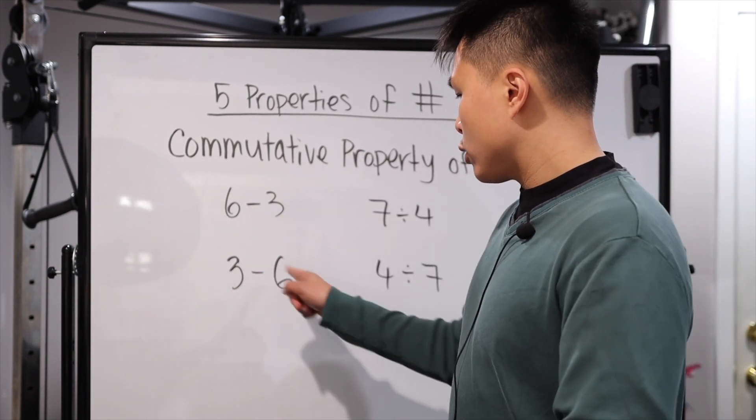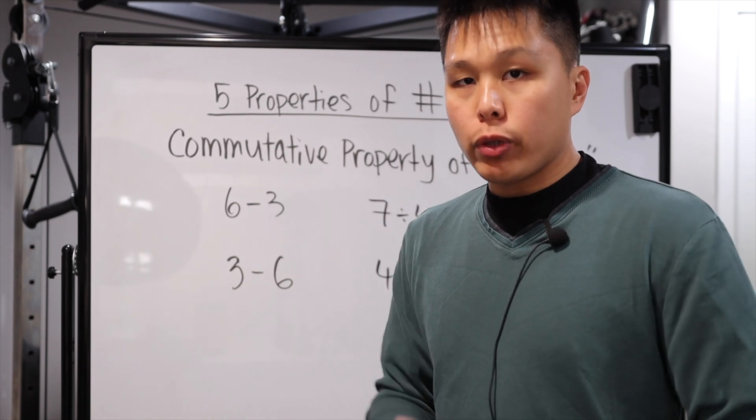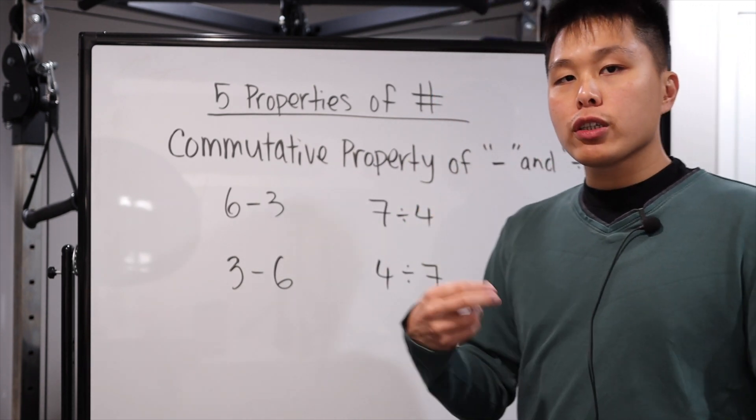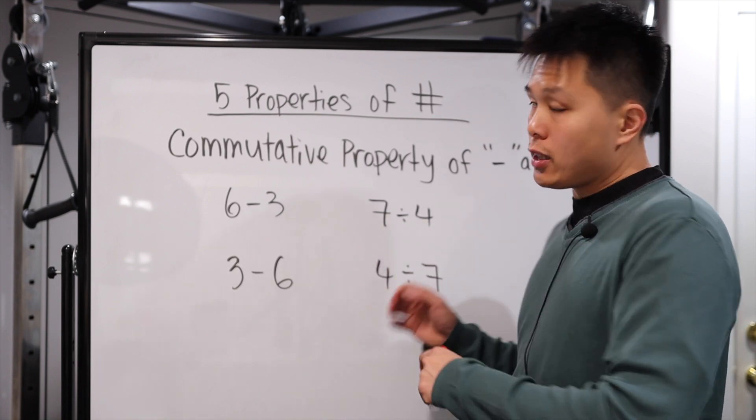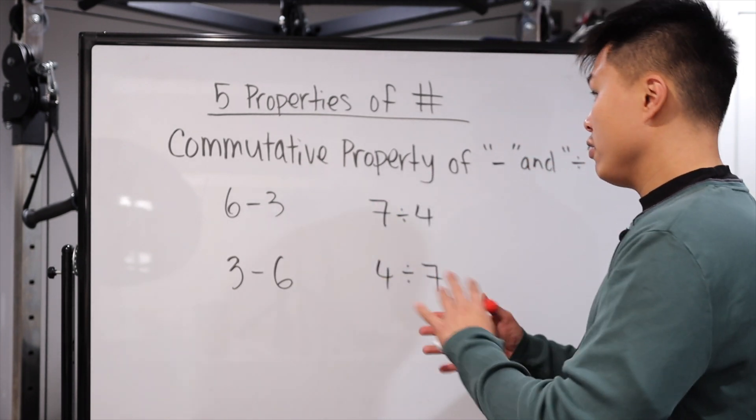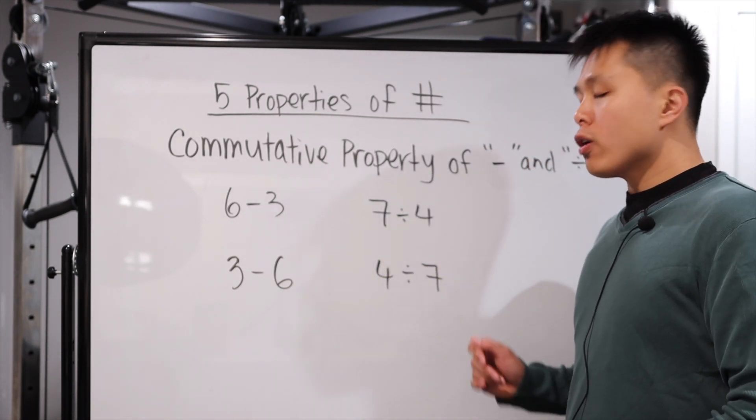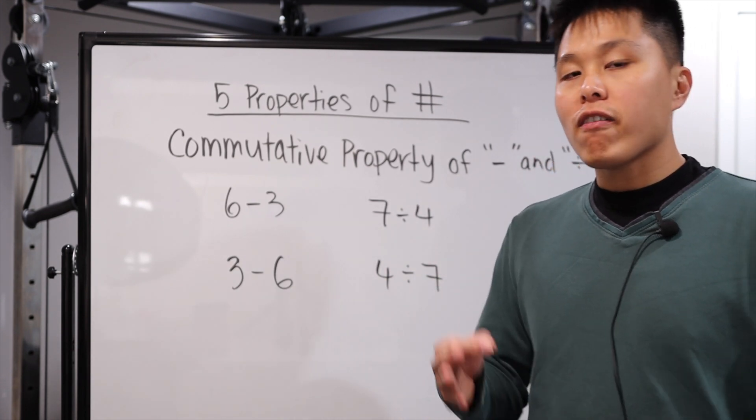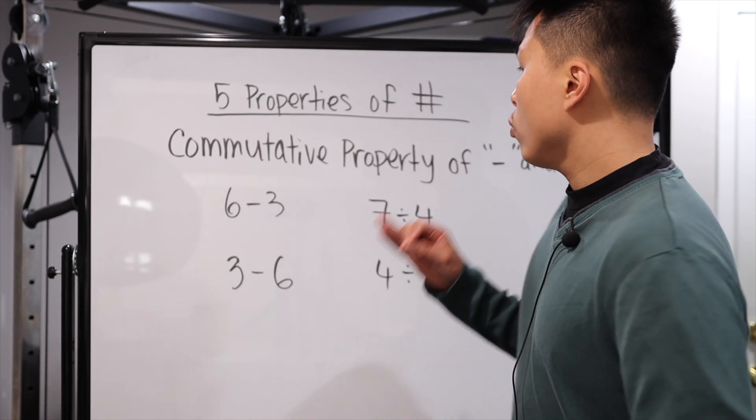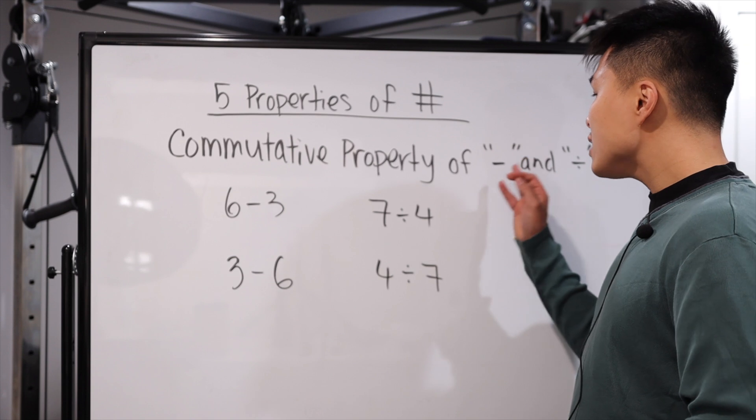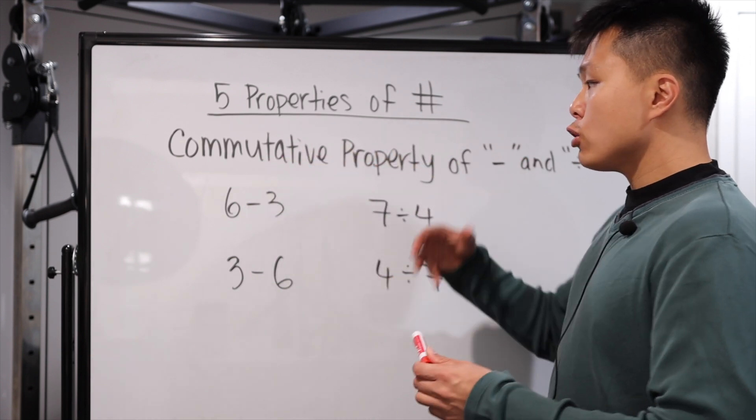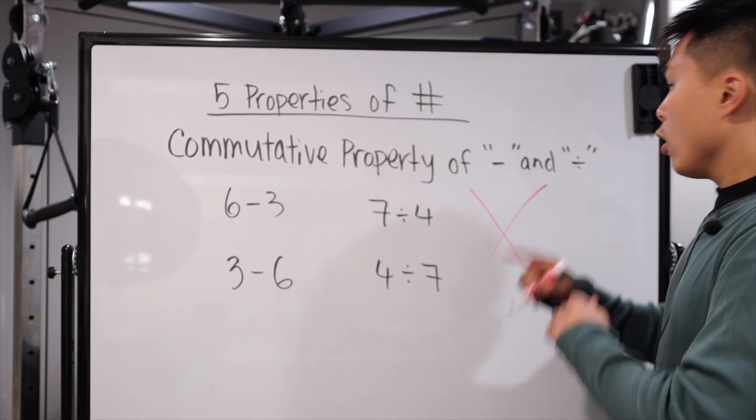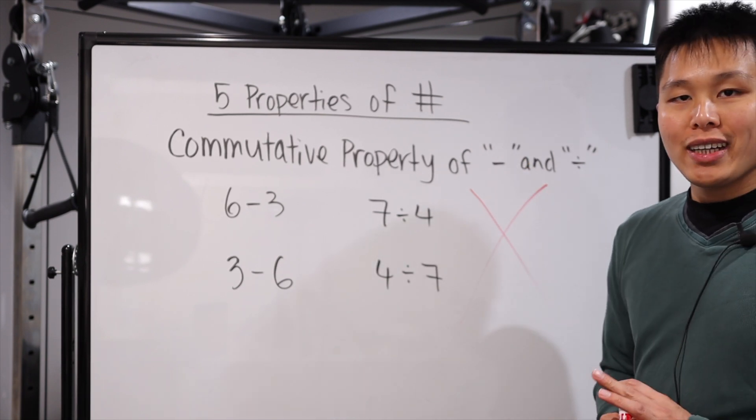Let's look at these examples. Six minus three is three, whereas three minus six is negative three. Two very different answers. Seven divided by four is actually greater than one. We can go into the decimal if you want, but I don't want to make this video super complicated. Whereas four divided by seven is less than one. So clearly these two answers are already very different. So once again, commutative property does not work for subtraction and division.